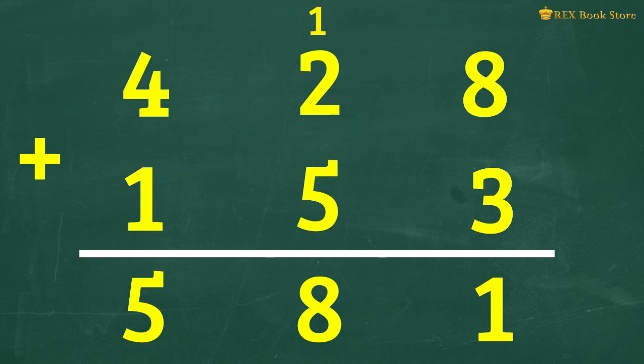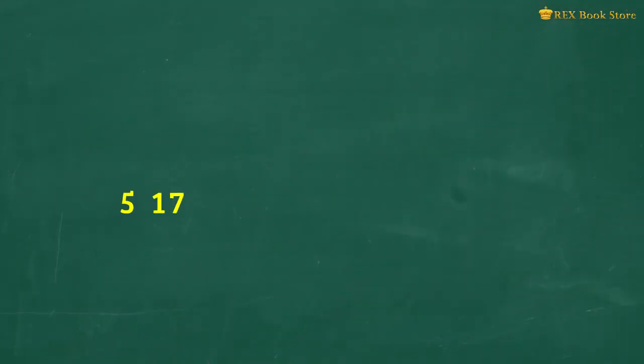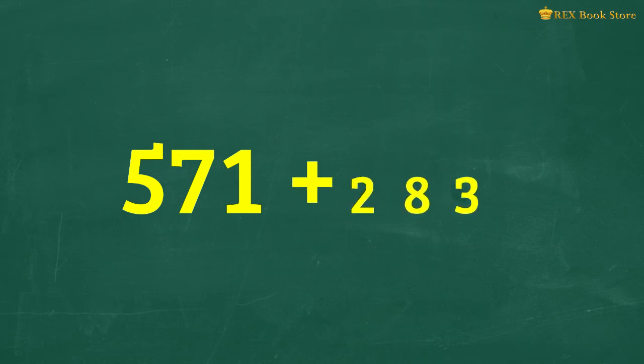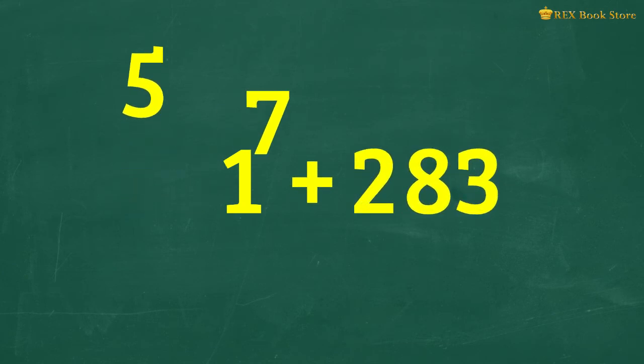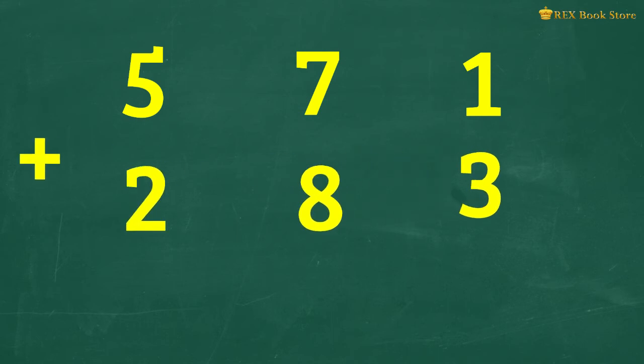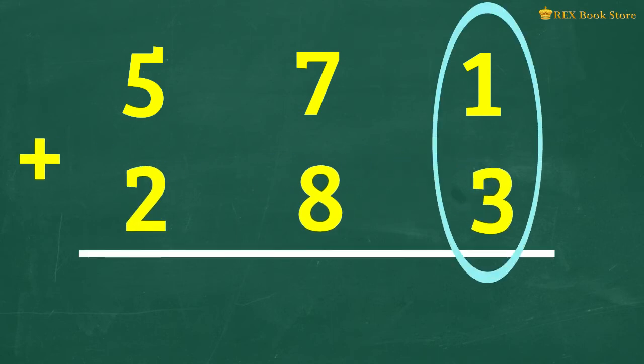Now it's your turn. Can you add 571 and 283? Did you add the ones first? 1 one plus 3 ones equals 4 ones.